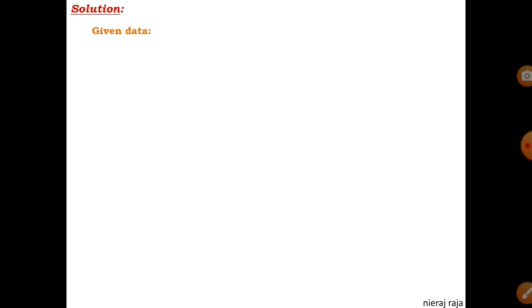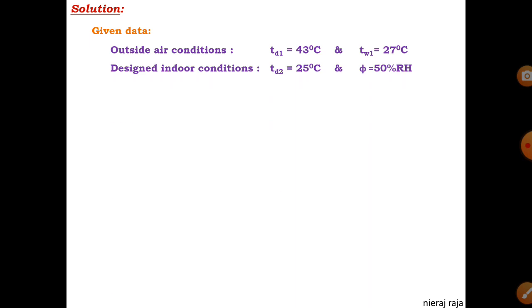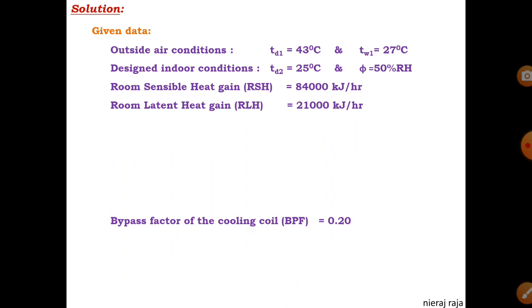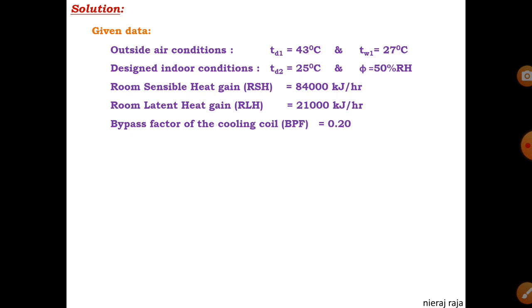Let us sort out the given data. Outdoor air condition: TD1 = 43°C, TW1 = 27°C. Design indoor air condition: TD2 = 25°C, 50% RH. Room sensible heat gain (RSH) = 84,000 kJ/hr. Room latent heat gain (RLH) = 21,000 kJ/hr. Bypass factor (BPF) = 0.2. Total supplied air: 80% recirculated air and 20% fresh air.